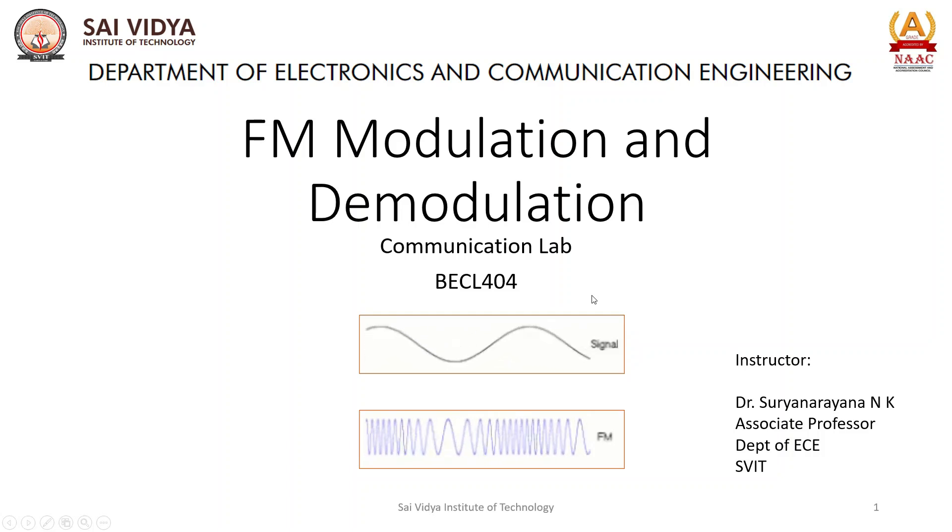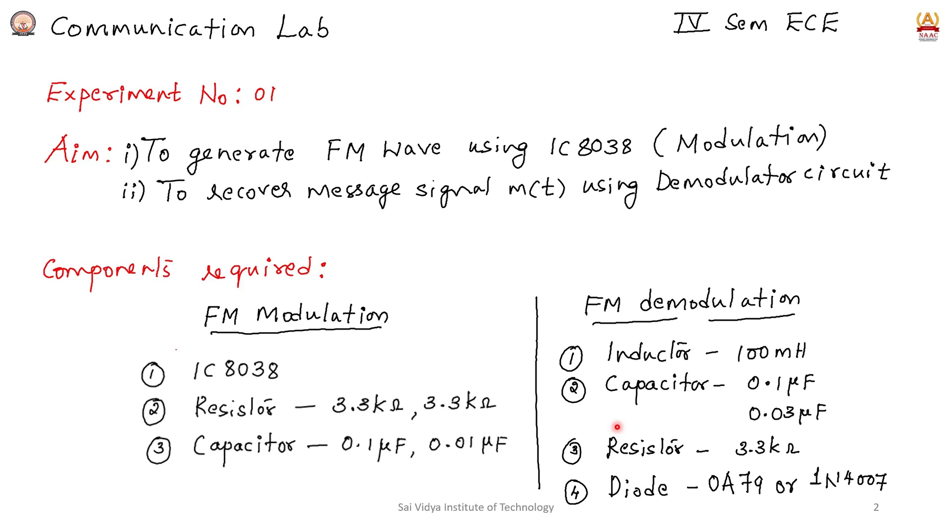In this lab session, we learned the generation and detection of FM modulation. The components required for FM generation include the 8038 IC along with discrete components. For demodulation, we also require diodes and discrete components.